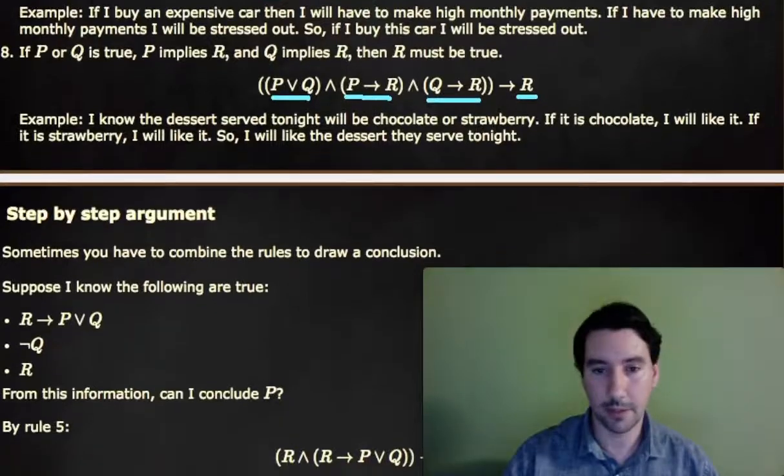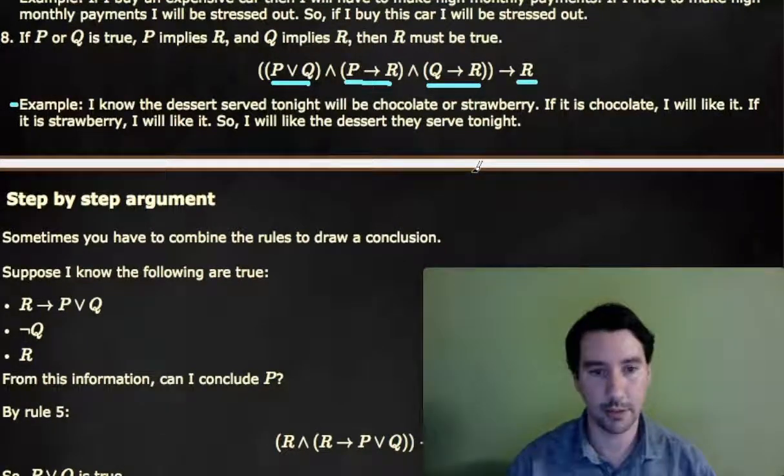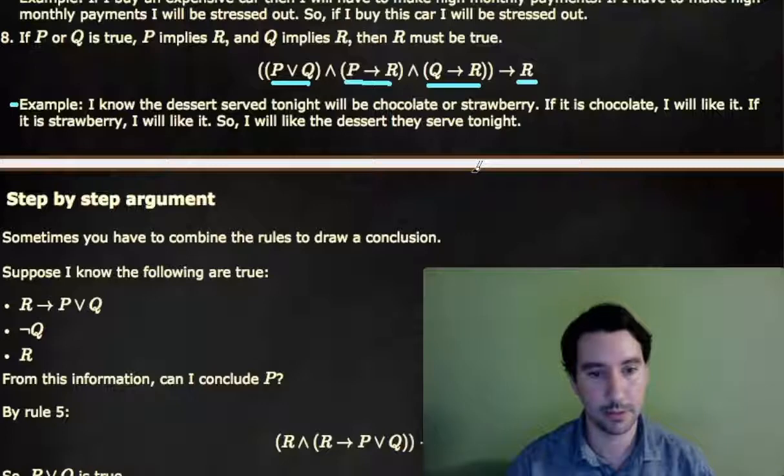So when making mathematical arguments, we're going to make these arguments in words, and this is what an argument is actually going to sound like. But all of these argument forms are valid forms when making a mathematical argument to show that a mathematical statement is tautologically true.